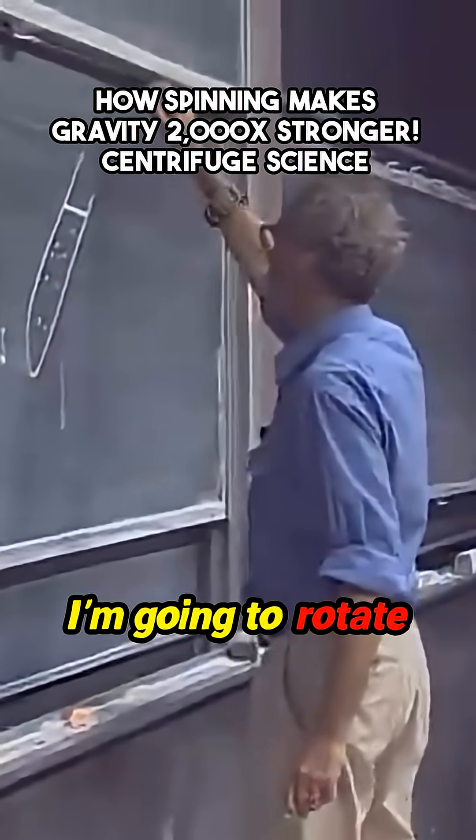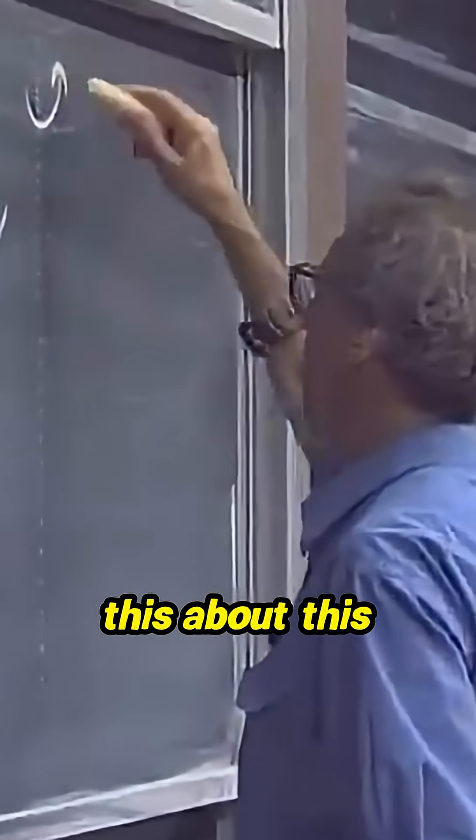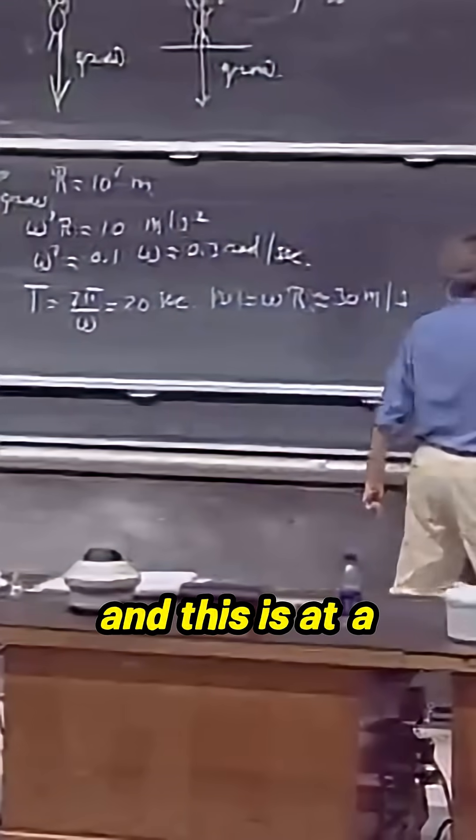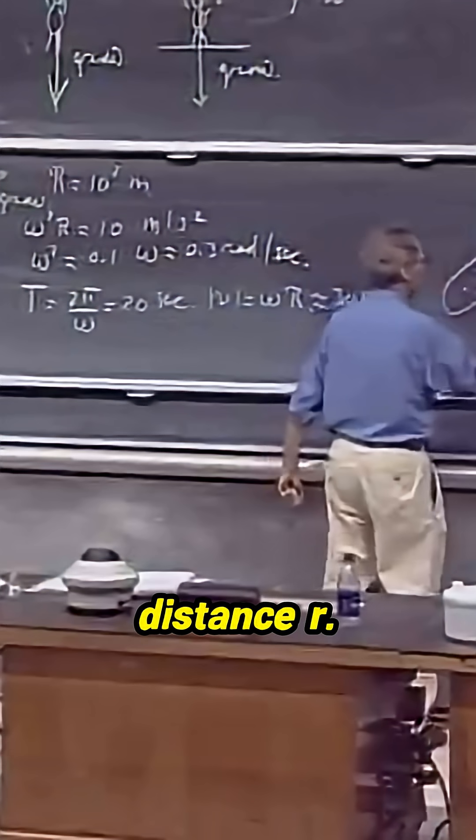Now I'm going to rotate this about this axis, going around like this, and I'm going to rotate it with an angular velocity omega. And this is at a distance r.